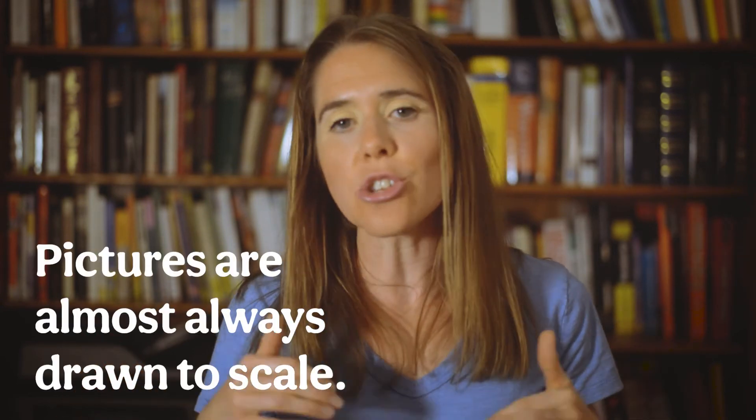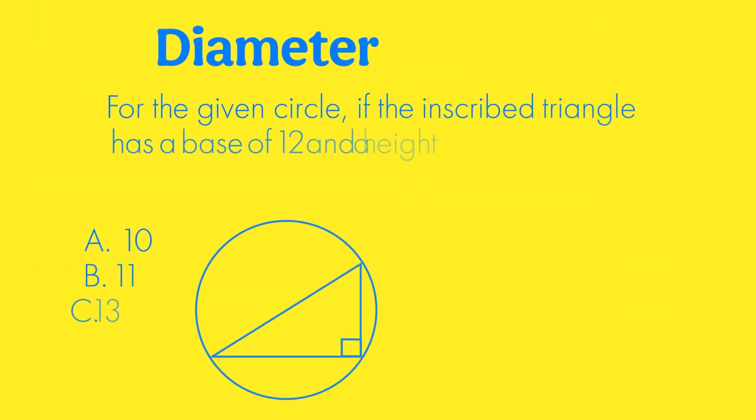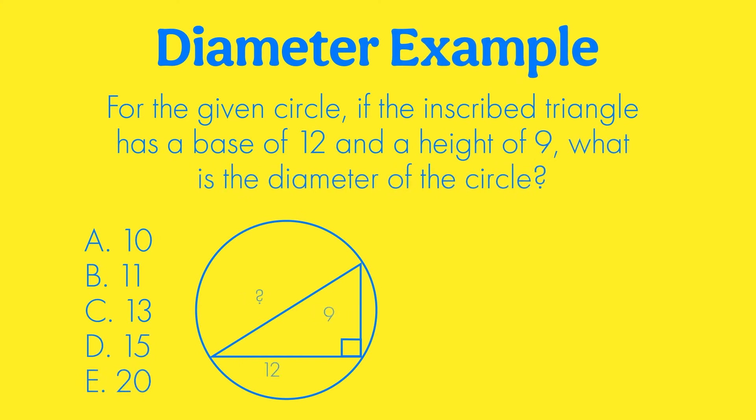The other way that we use pictures is if the test gives you a picture, you want to use it because using the picture, even if you don't know how to do it math wise, you can still use the picture to help you make an educated guess because even though they say that the pictures aren't necessarily drawn to scale, they're almost always drawn to scale. So you can use the answer choices to help you estimate. So if we look at this one that's in front of you right now, it says for the given circle, if the inscribed triangle has a base of 12 and a height of 9, what is the diameter of the circle? Okay, so inscribed triangle means a triangle that's inside the circle, like touching the circle.